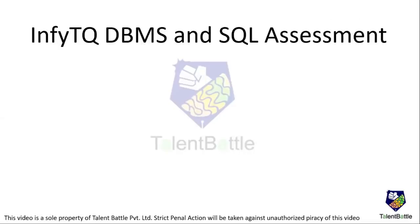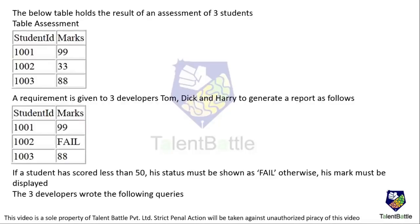The first question: the below table holds the result of an assessment of three students. The table structure has student ID and marks. The requirement is given to three developers — Tom, Dick, and Harry — to generate a report where if a student has scored less than 50, the status should be shown as 'fell'. Let's see the queries each developer has written.